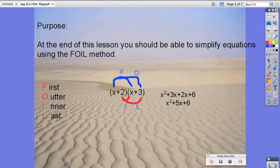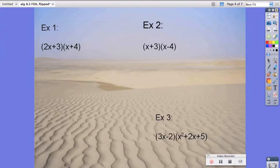And that is our FOIL method. So let's try a couple more together. Example 2. We're going to do first, outer, inner,